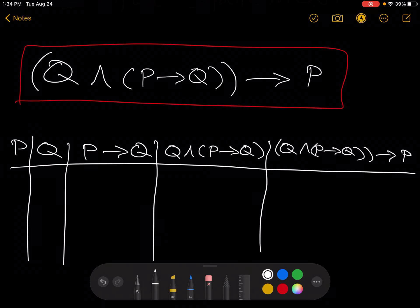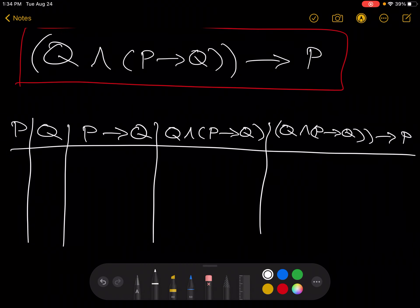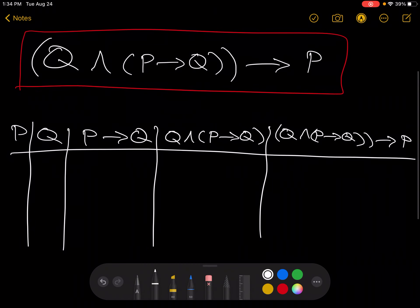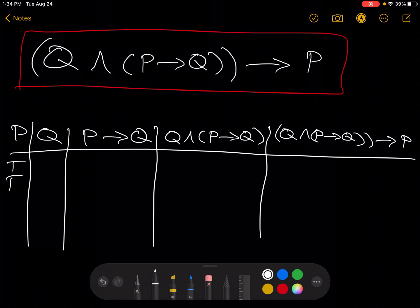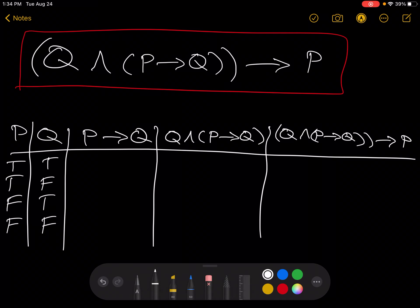Now, remembering that we want to exhaust all possible truth assignments, we'll put true, true, false, false. True, false, true, false.